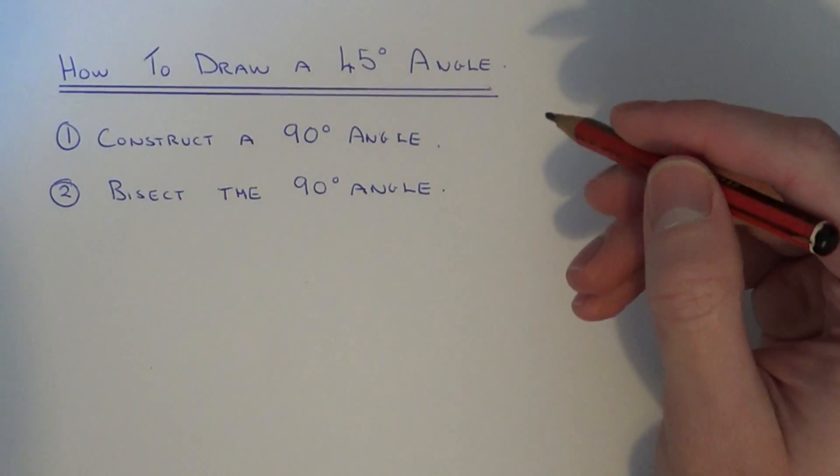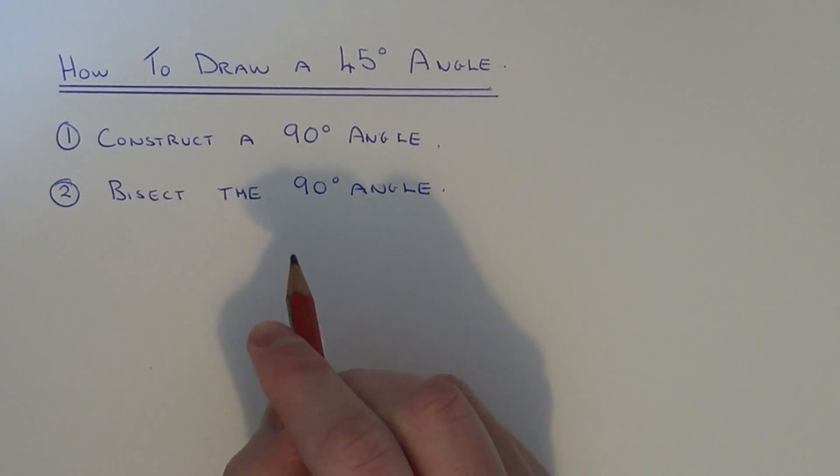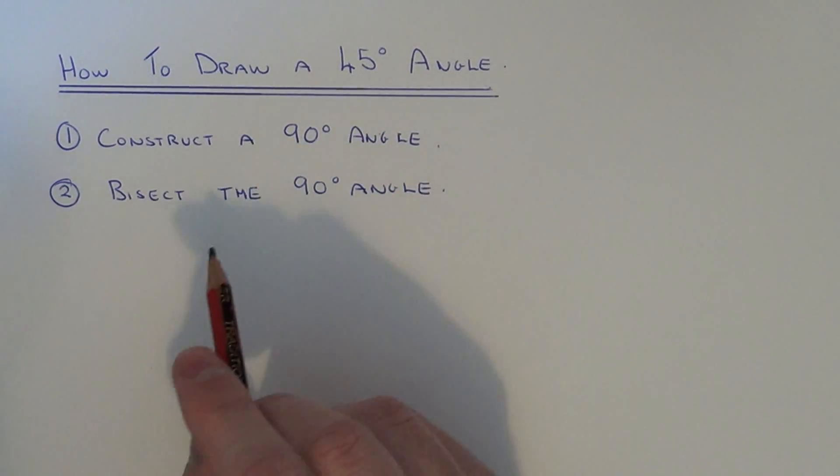To construct a 45-degree angle, first you need to make a 90-degree angle. Then once you've constructed the 90-degree angle, you can bisect it to give you the 45-degree angle.